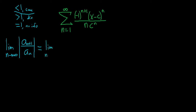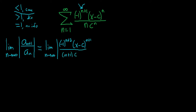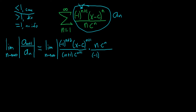So this is the limit as n goes to infinity of the absolute value. The first thing we'll do is work out a sub n plus 1 by replacing all of the n's with n plus 1's. So this n will be n plus 2. We have negative 1 to the n plus 2, then x minus c to the n plus 1, over n plus 1 times c to the n plus 1. Then we divide by a sub n, which means we multiply by its reciprocal: n times c to the n over negative 1 to the n plus 1, times x minus c to the n.